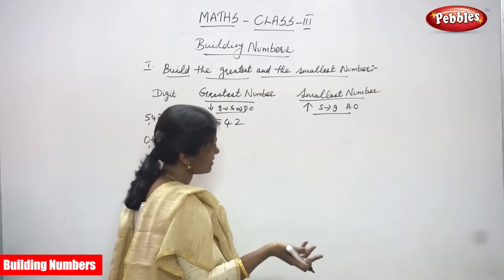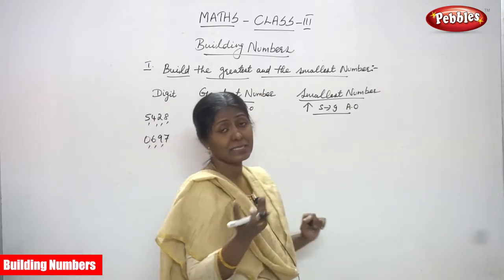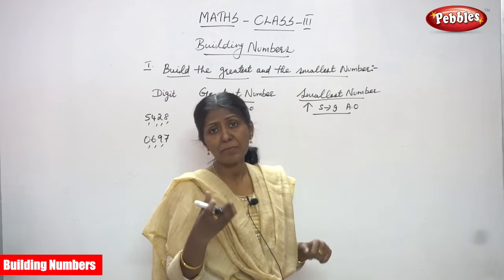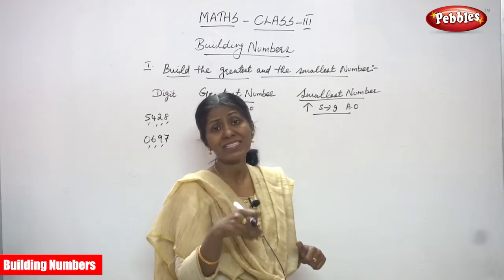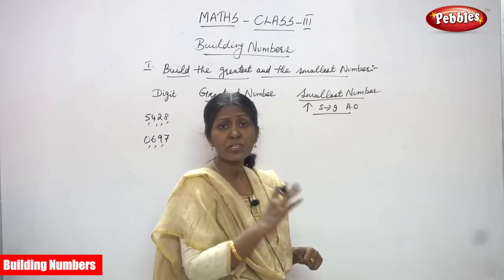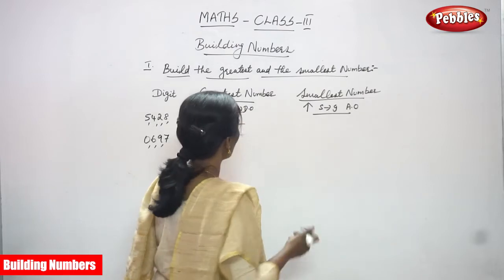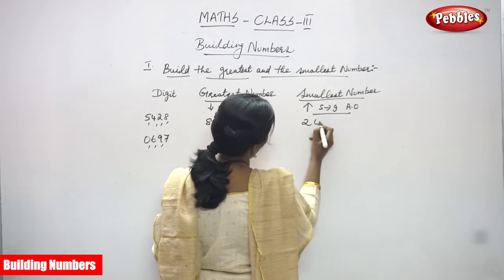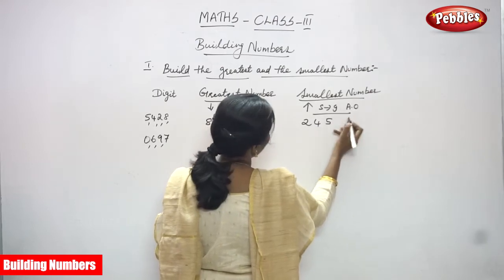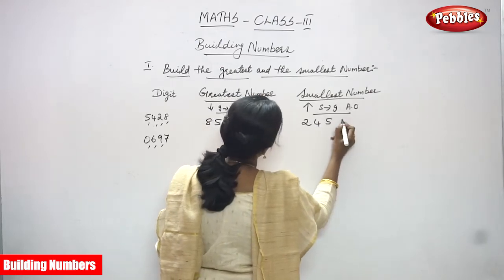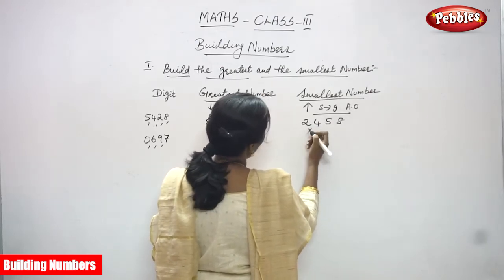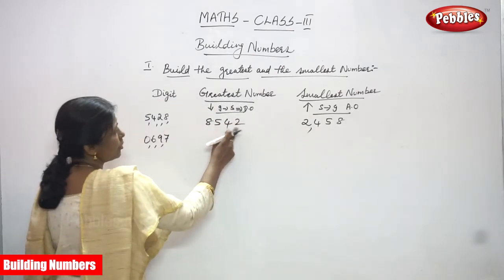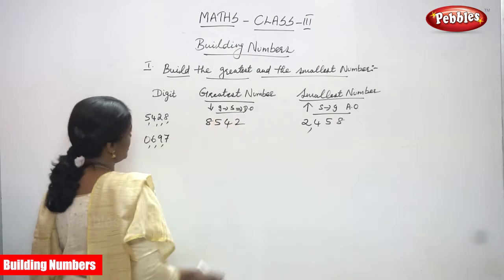Now we move on to the smallest number. Smallest number means ascending order — arranging numbers in increasing order, that means smallest to greatest. Which one is the smallest number? 2 is the smallest. First greater is 4, second greater is 5, and the greatest number is 8. So 2,458 is the smallest number, and 8,542 is the greatest number.